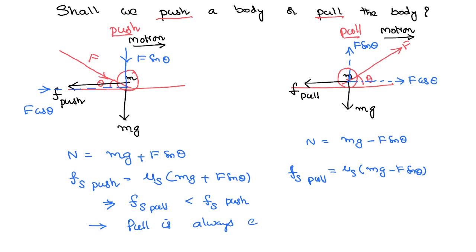As friction is less in the case of the pull, pulling becomes easier than pushing. That is why pull is always easier than push. We can see many people on the streets pulling their loads — they know by experience that pulling is easier than pushing because the frictional force is less in the case of the pull. Therefore, we shall always pull the body if we want to make the job easier.